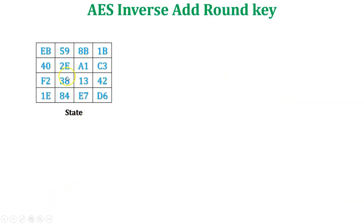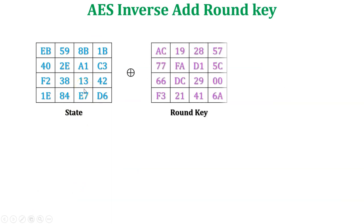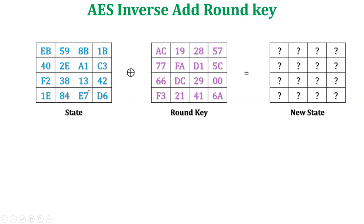128 bits of the state array is bitwise XORed with the 128 bits of the round key to generate a new state array. Here, state array means the output of the previous transformation function in the decryption process. The inverse add round key function proceeds one column at a time, so column-wise XOR operation will be performed.